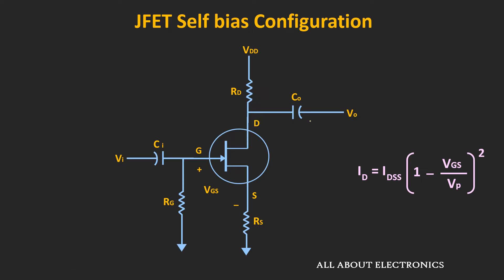In the self-bias configuration, even if the drain current ID changes due to external parameters like temperature, this configuration is able to stabilize the operating point. JFETs are inherently much more thermally stable compared to BJTs. But if the drain current ID increases, the voltage drop across RS increases, meaning VGS increases, and this increase in VGS reduces the drain current ID. In this way, self-bias prevents changes in drain current and voltage due to external parameters, stabilizing the operating point.